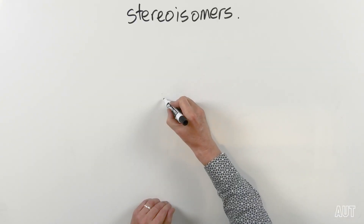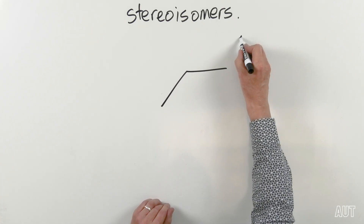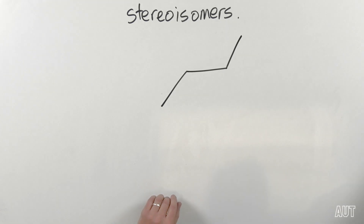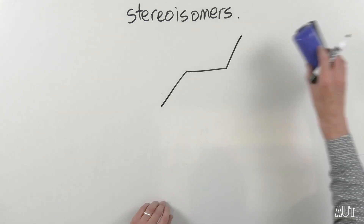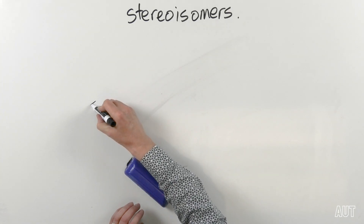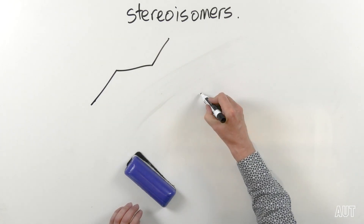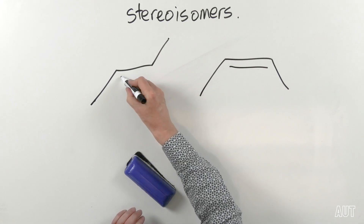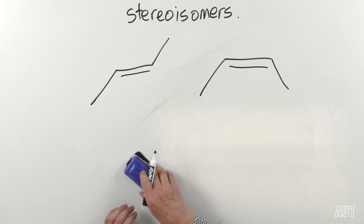We're going to start off with a classic example of a stereoisomer. It's going to be this here versus this here — these two molecules.